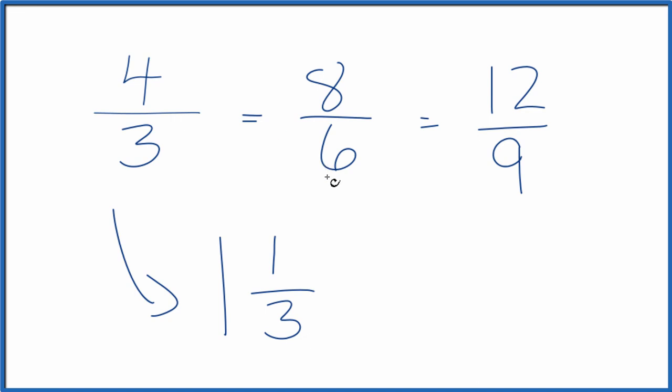So in answer to our question, 4 thirds, we have the equivalent fractions of 8 sixths, 12 ninths. You could call 1 and 1 third an equivalent fraction. And all of these have the same value because they're equivalent fractions. This is Dr. B. Thanks for watchin'.